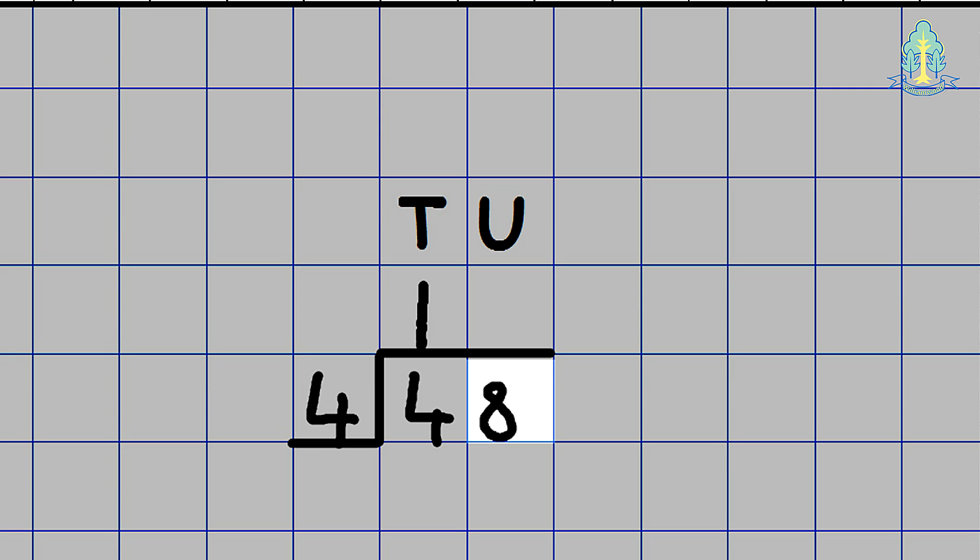We would then say 8 divided by 4 is, or how many 4's go into 8. The children would once again complete their answer on the line and in the correct column. The answer is 12.